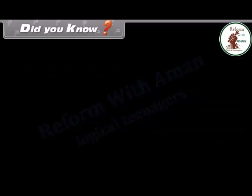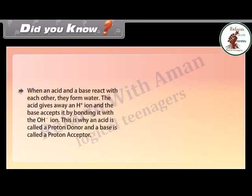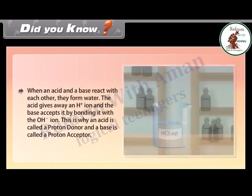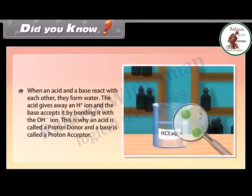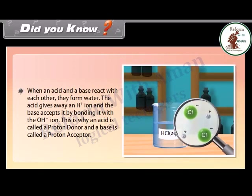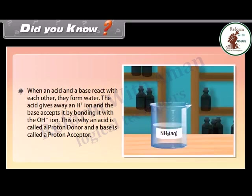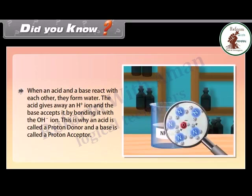Did you know? When an acid and a base react with each other, they form water. The acid gives away an H+ ion and the base accepts it by bonding it with the OH- ion. This is why an acid is called a proton donor and a base is called a proton acceptor.